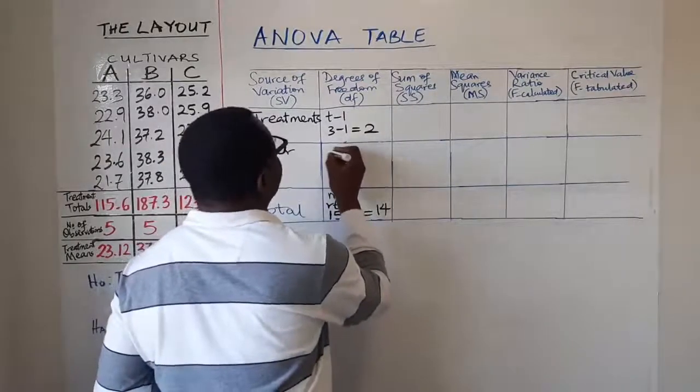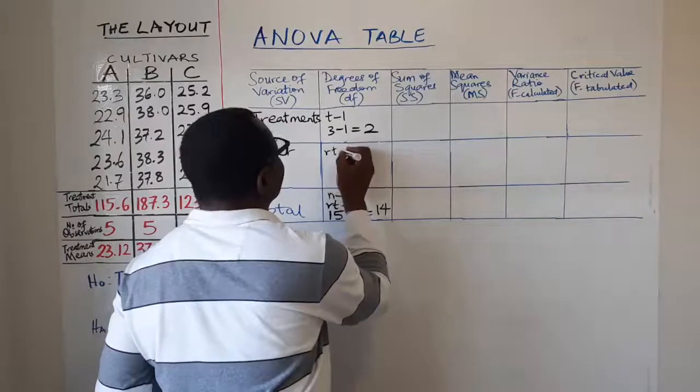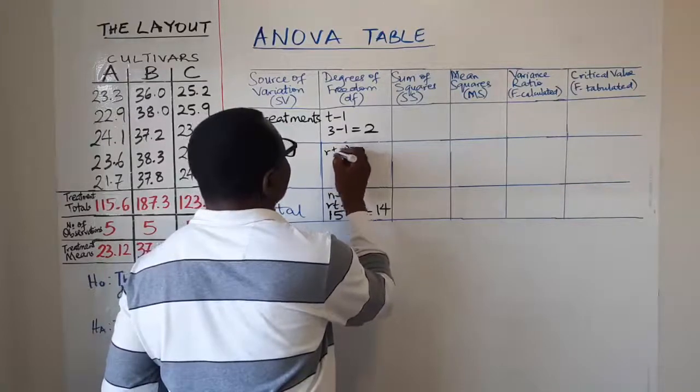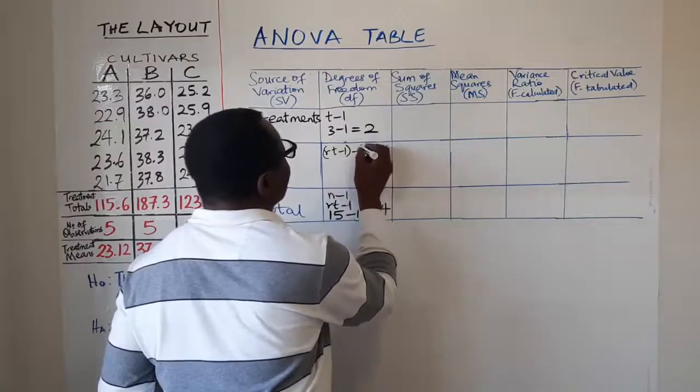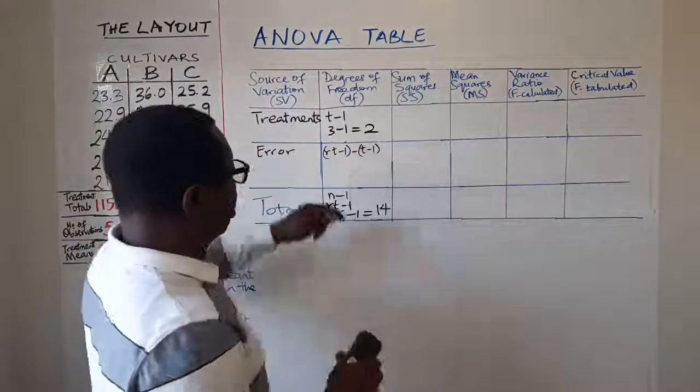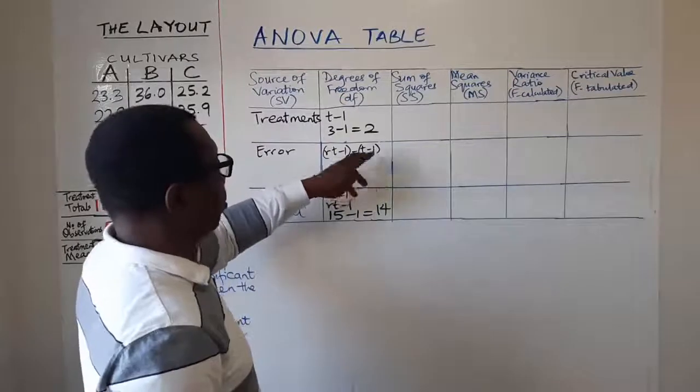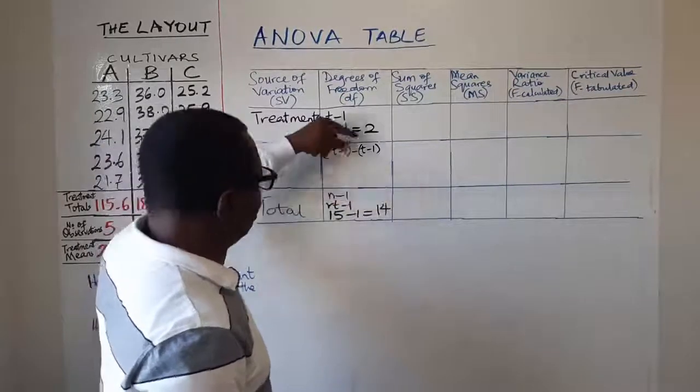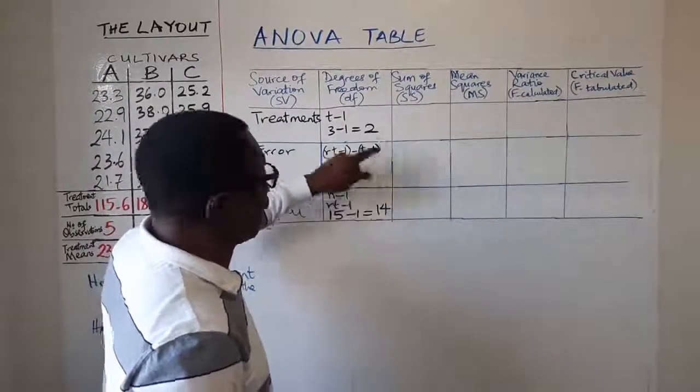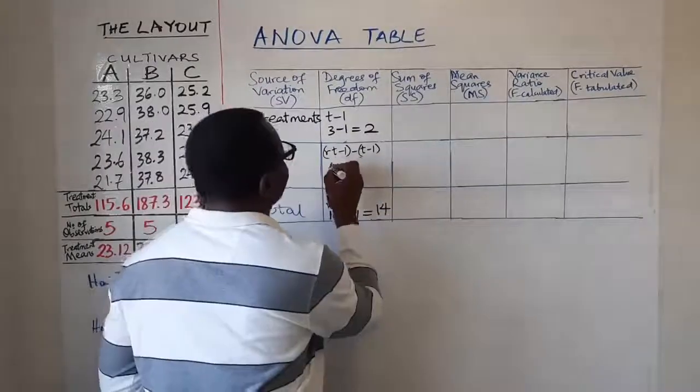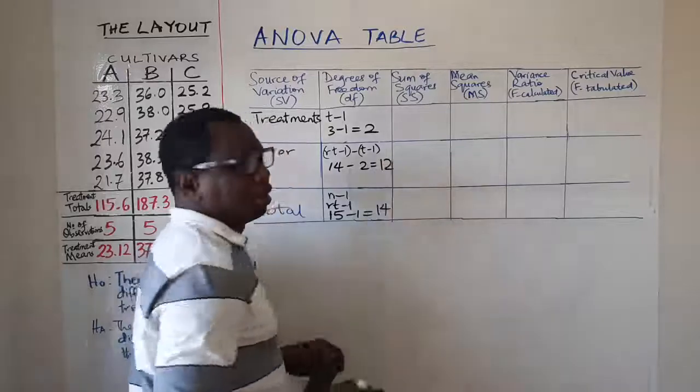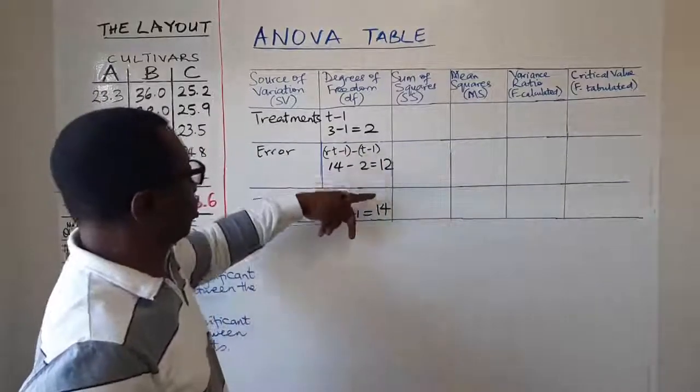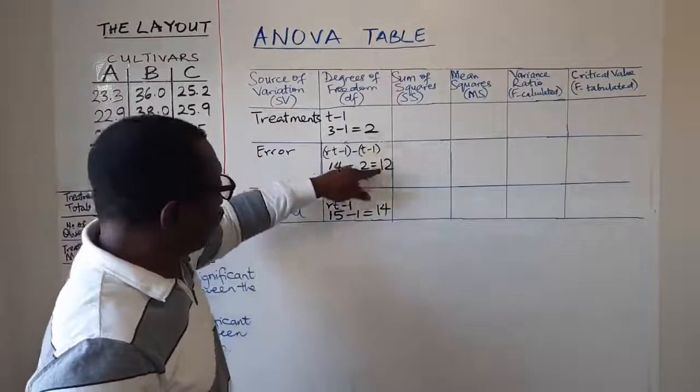You don't need to bother yourself trying to solve that. You already have 14 here, you already have 2 there. So that's simply 14 minus 2. And that's 12. Very easy to do. Now you have got that. The next thing is sum of squares.